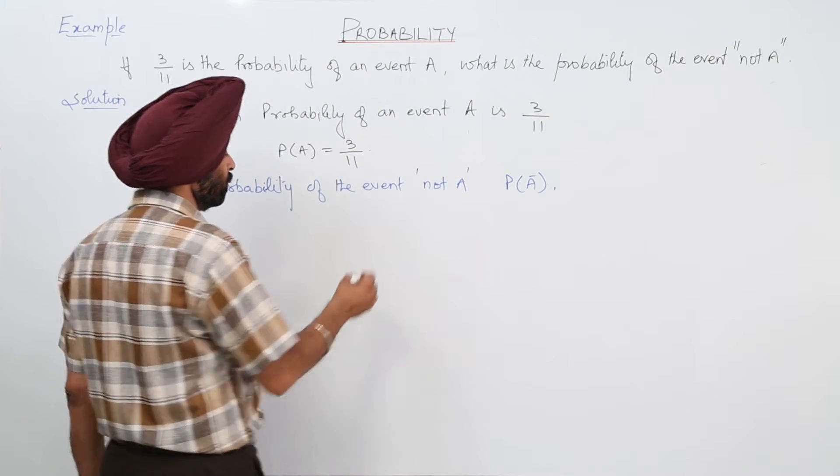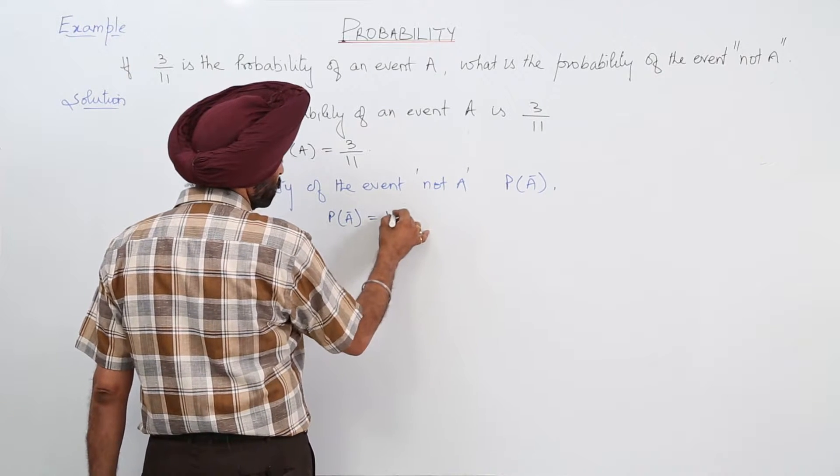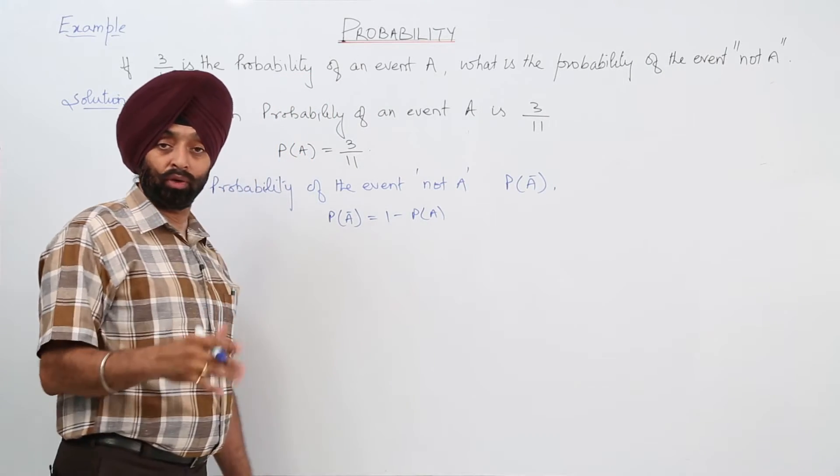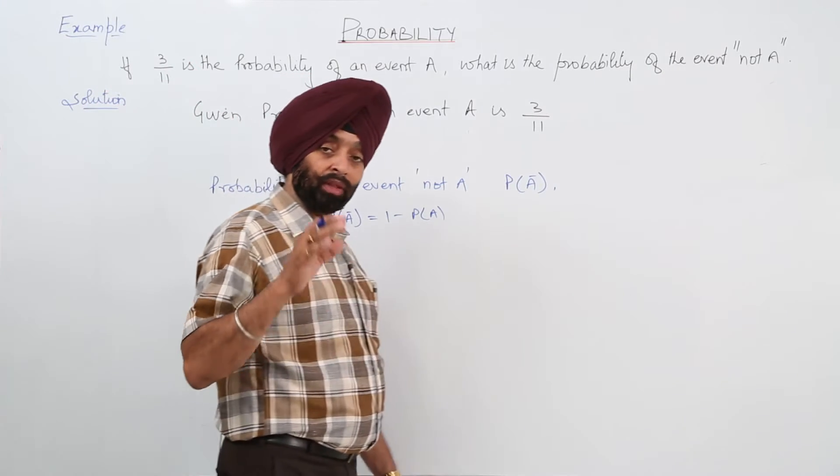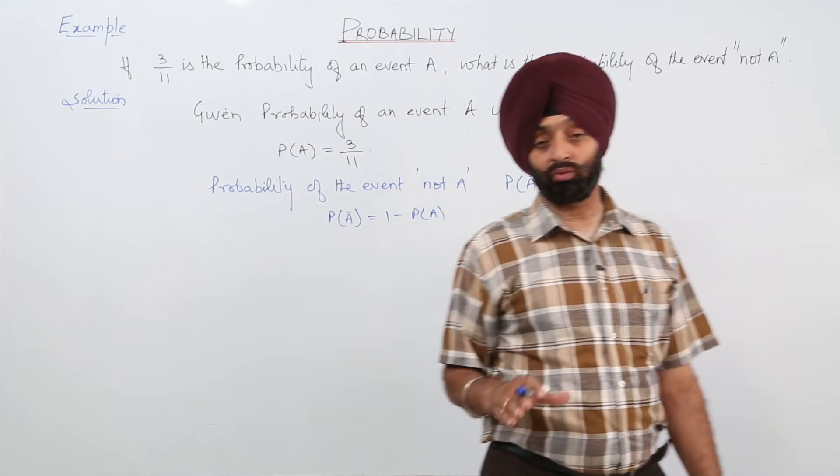Now P(not A) is equal to 1 minus P(A). Because probability for an event and not an event should never be more than 1.